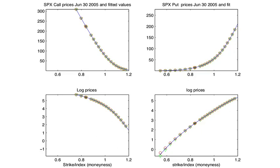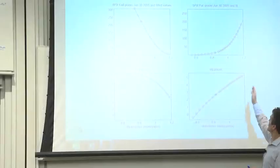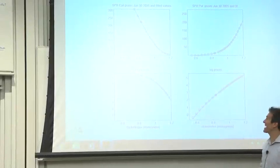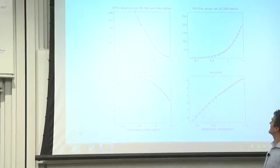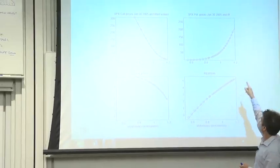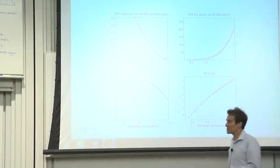On the right, I've got the put prices. They work the same way. As a function of strike, one is at the money, strike equal to today's stock price, which was about $1,100 on the day that I downloaded these. And you can see that out of the money puts and in the money puts do exactly what they're supposed to do.